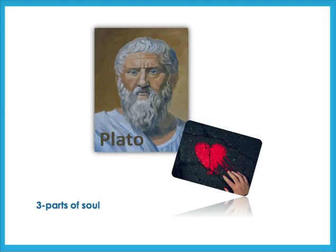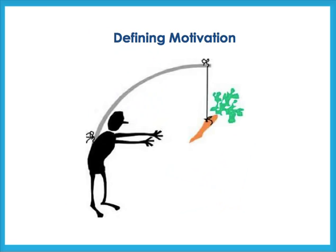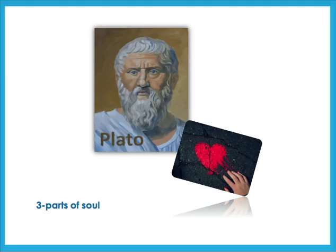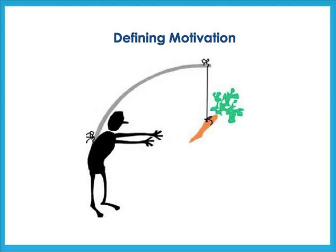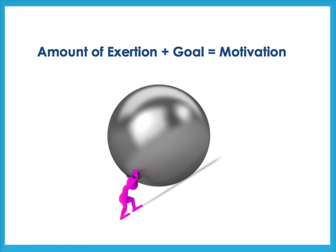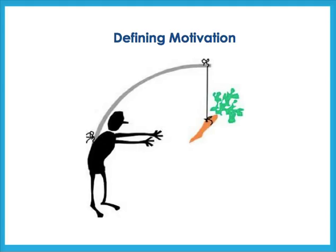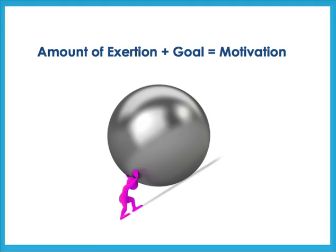To examine Keller's model further, it is important to define a few key terms. Motivation refers broadly to what people desire, what they choose to do, and what they commit to do. Motivation consists of the amount of effort a person is willing to exert in pursuit of a goal. This is what gives motivation its magnitude and direction.